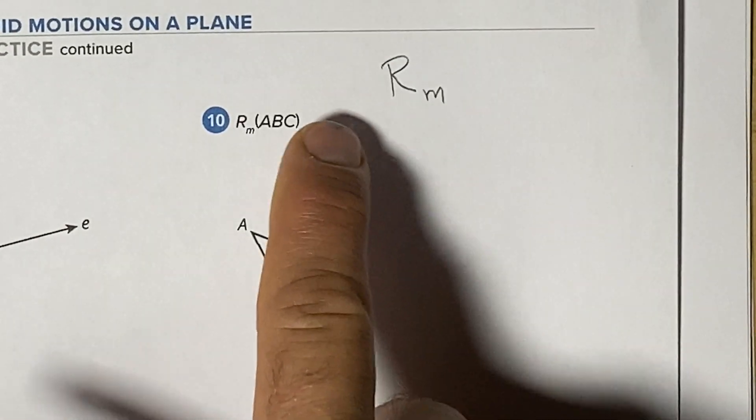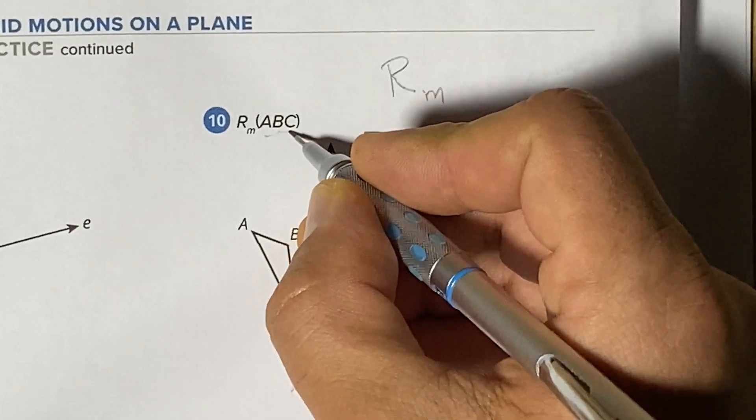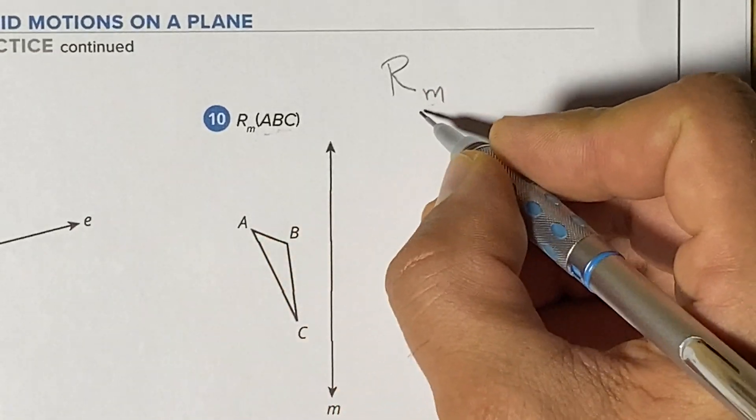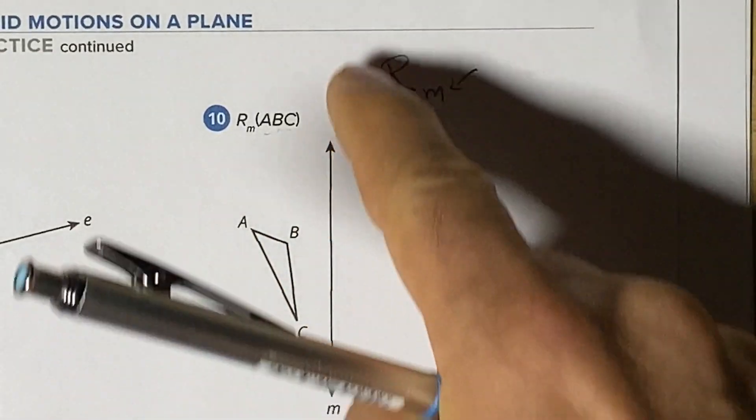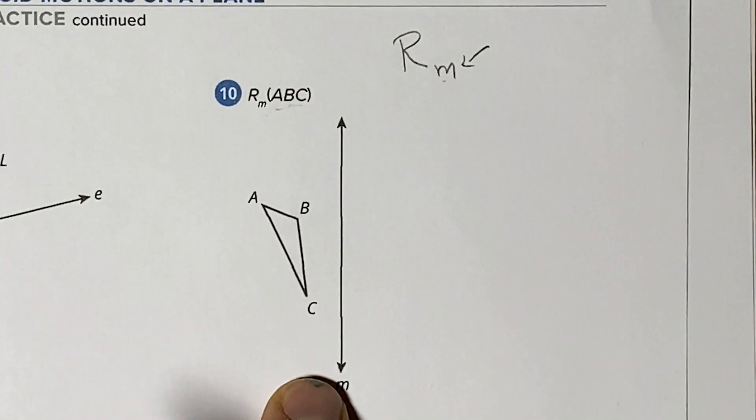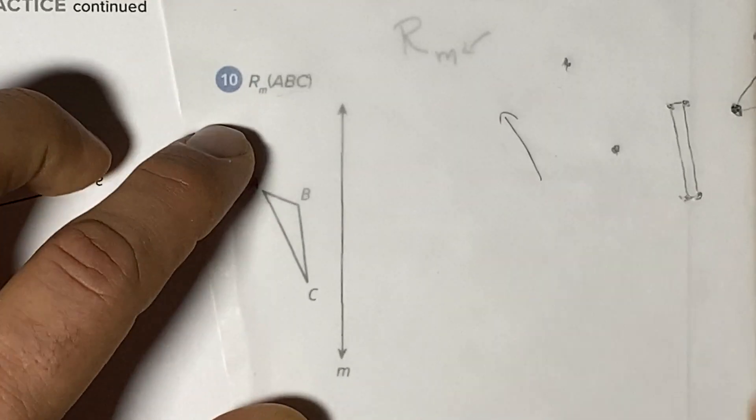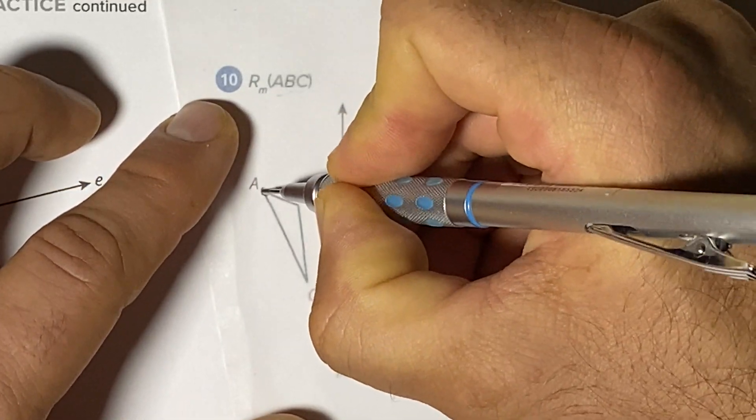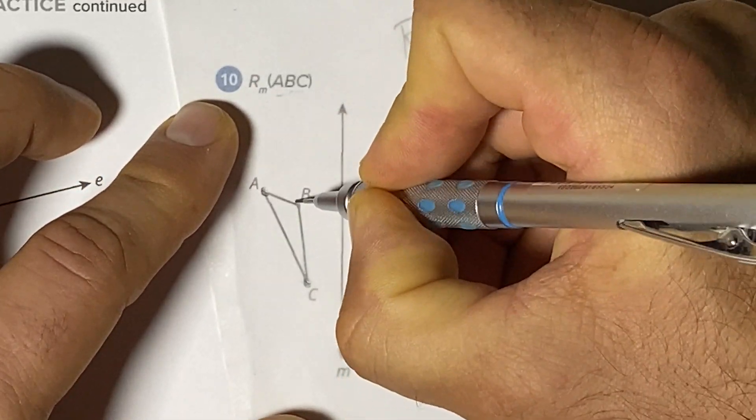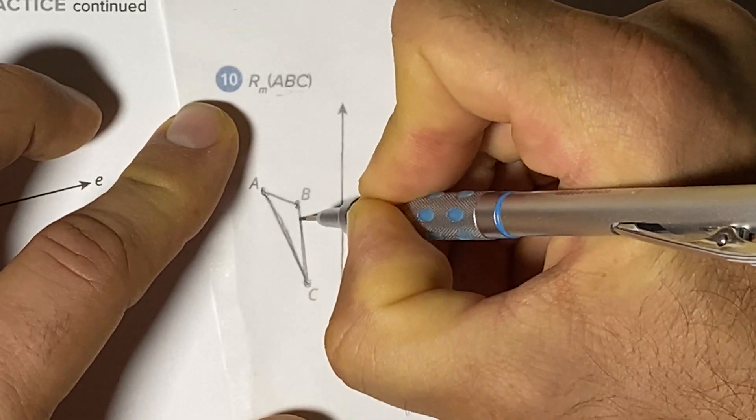We're going to reflect triangle ABC over line M. The letter here is what we're reflecting it over, this line M. In a reflection, we just need to remember two things: we will trace the shape as well as the guideline.